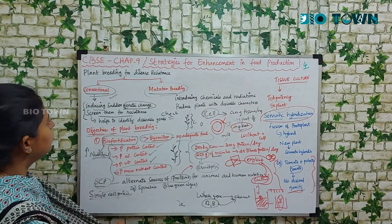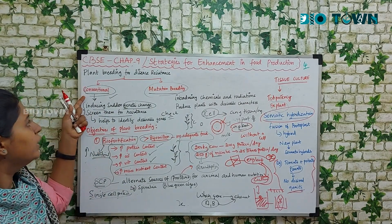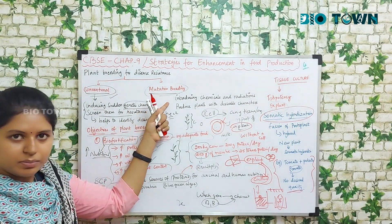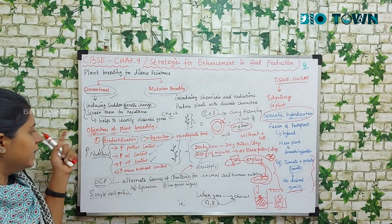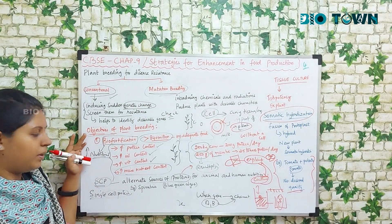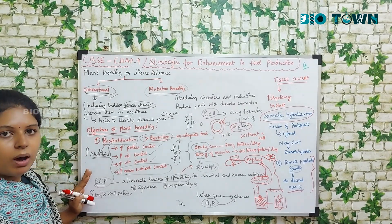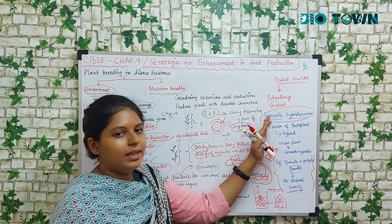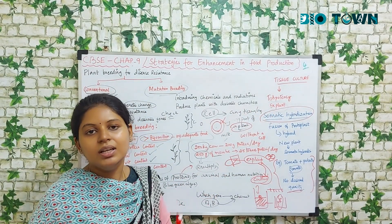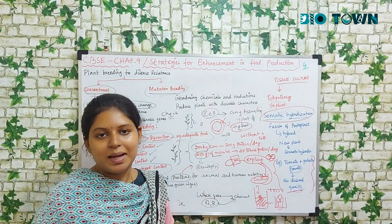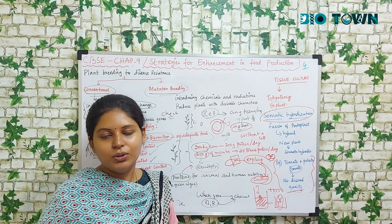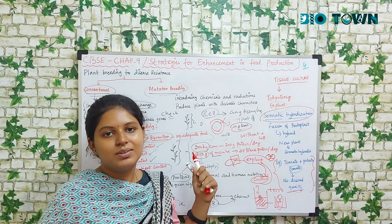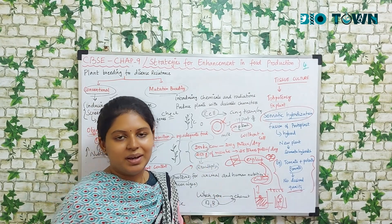So in this video we spoke about two different types of plant breeding techniques: conventional breeding and mutational breeding. Then we spoke about the major objectives of plant breeding, then single cell protein, then tissue culture, and then somatic hybridization. Hope you all understood this chapter and enjoyed it. This is a very interesting chapter. Meet you all in the next chapter. Bye!